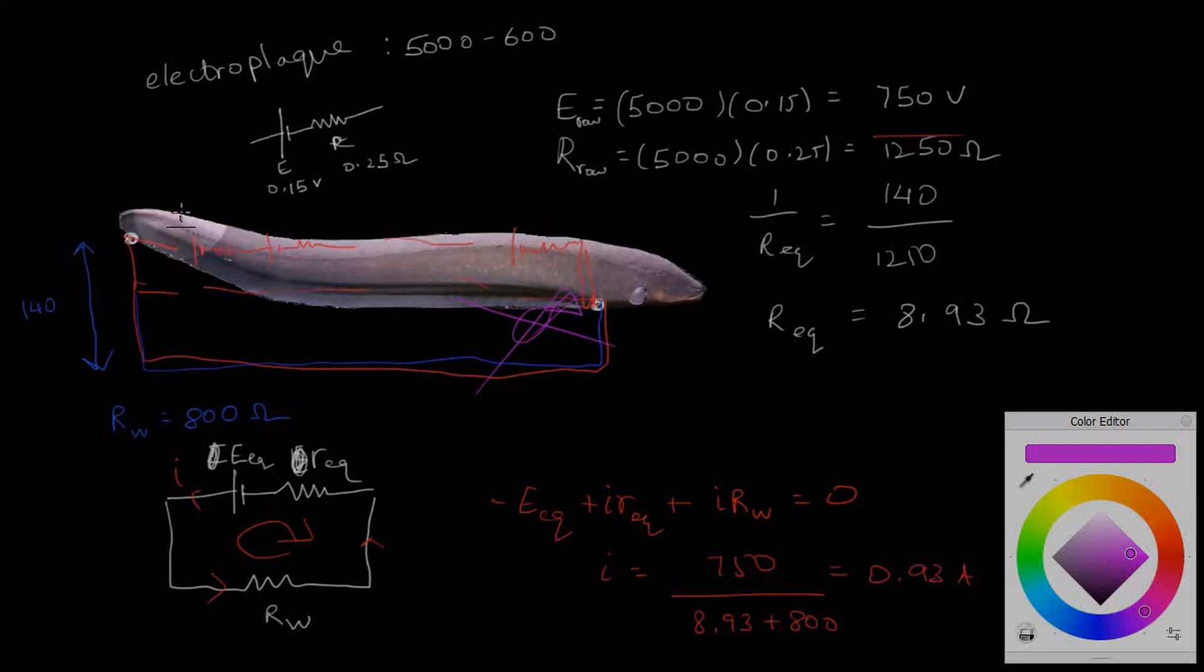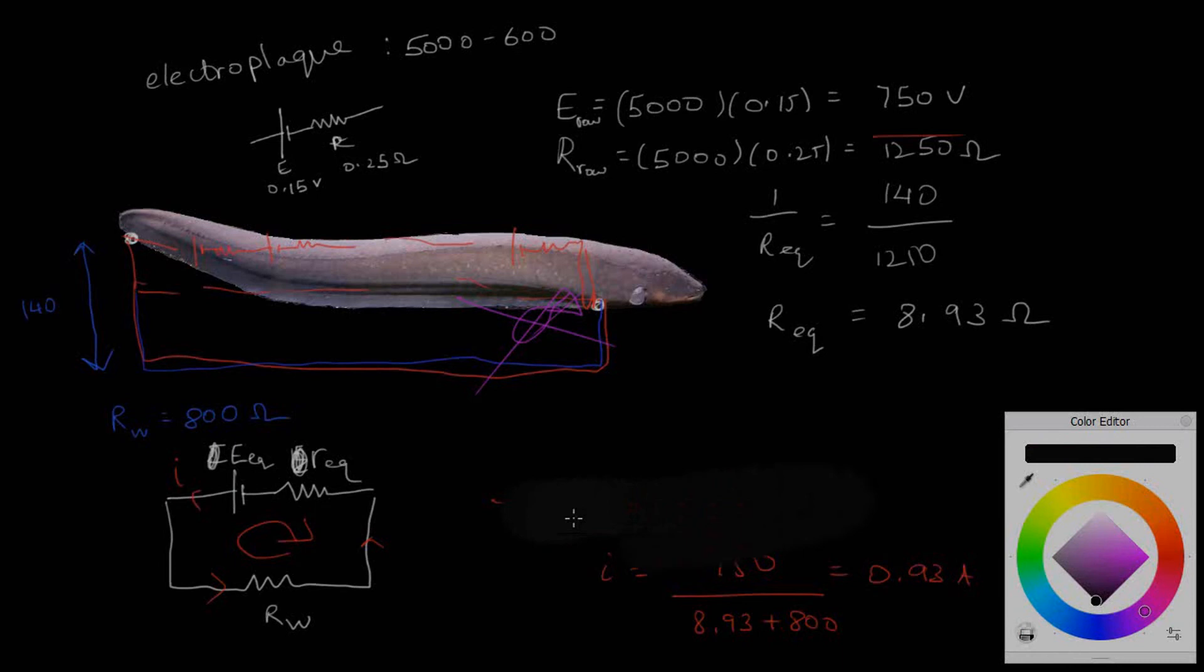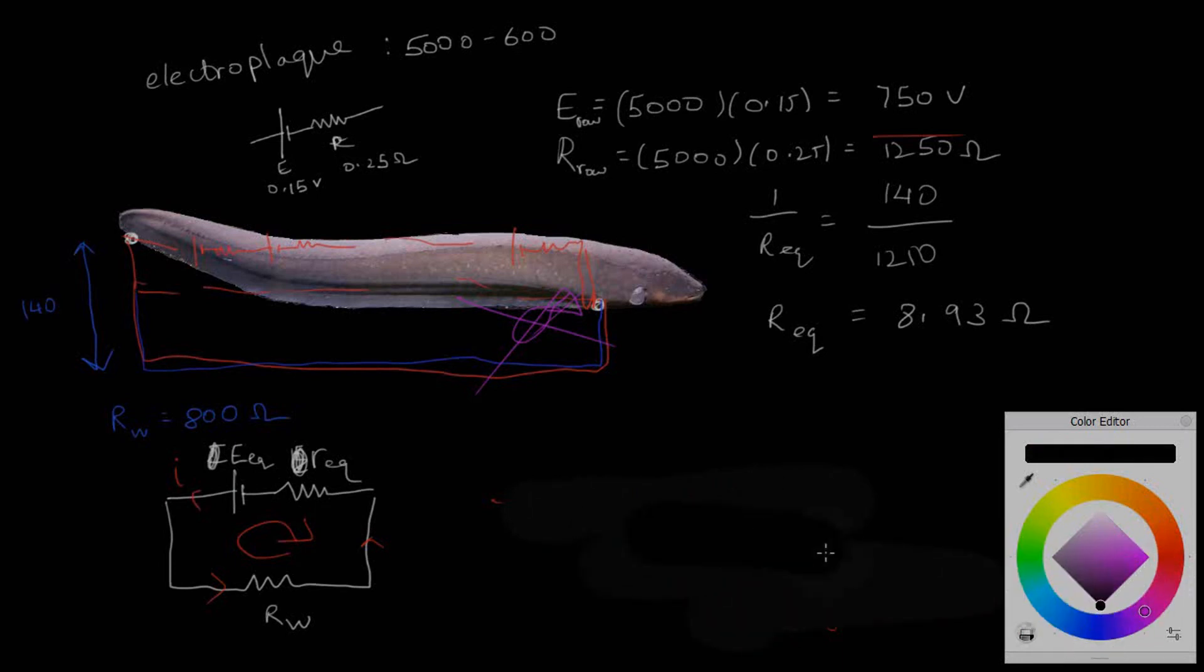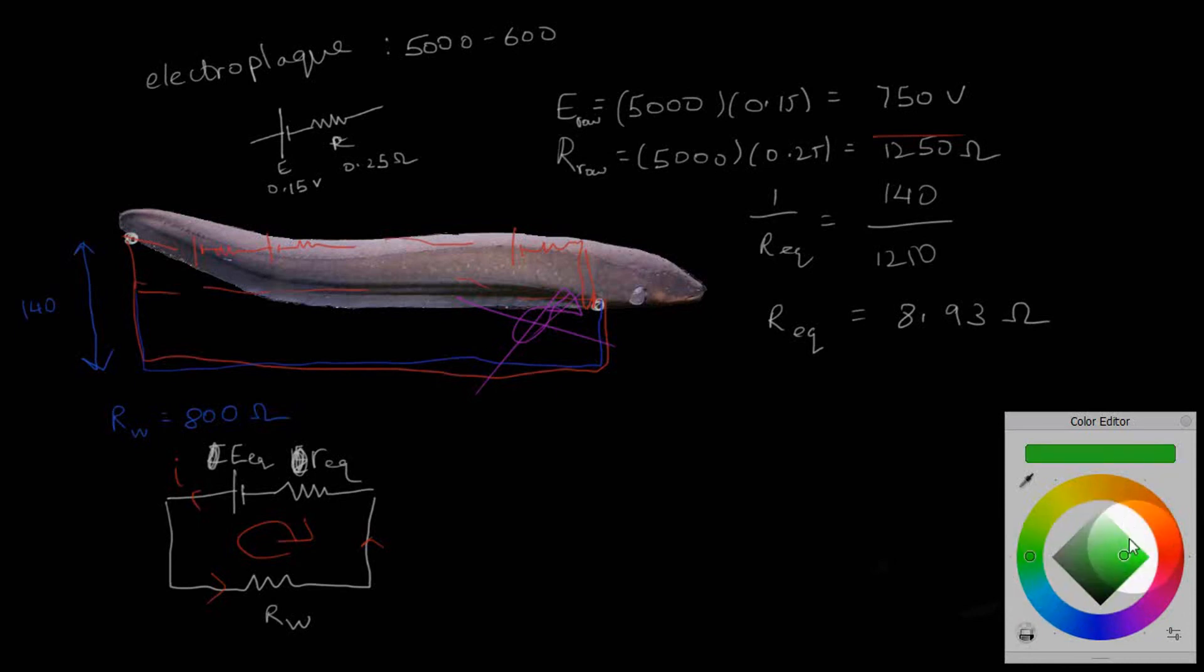But why doesn't the electric eel shock itself? It's also got to have 0.93 amps of current flowing across it. For that we'll find out another calculation and remove this part.